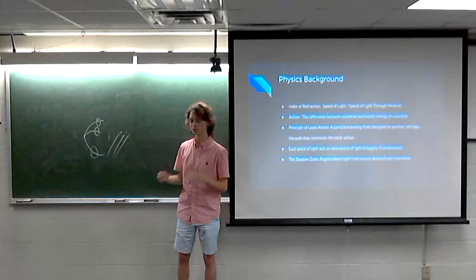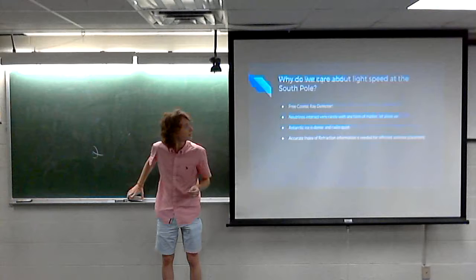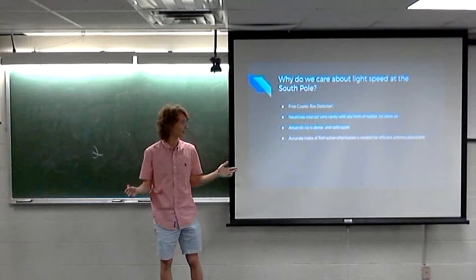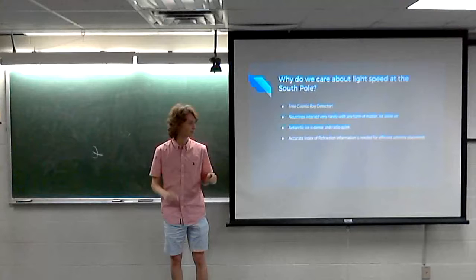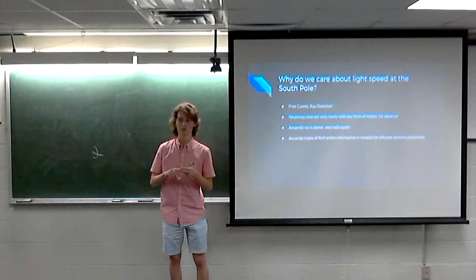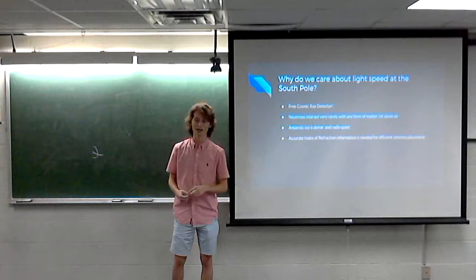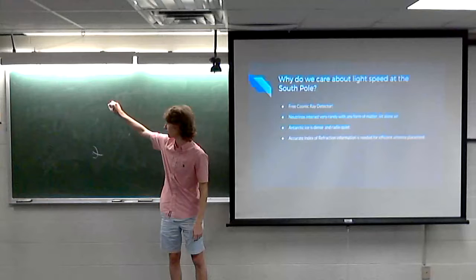In that shadow zone you'll get a reduced signal or no signal at all, depending on the level of shadow. We care about the index of refraction in Antarctic ice because the Antarctic acts as a huge cosmic ray detector. Neutrinos are very light particles that rarely interact with matter, but the Antarctic ice is dense and radio-transparent, so when a neutrino interacts with something in the ice it releases a radio shower that we can detect with minimal interference, giving us a denser shower than neutrino interactions with air.